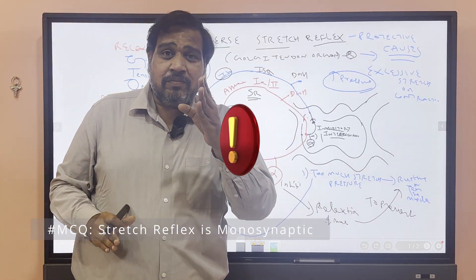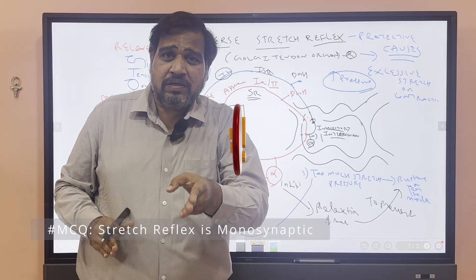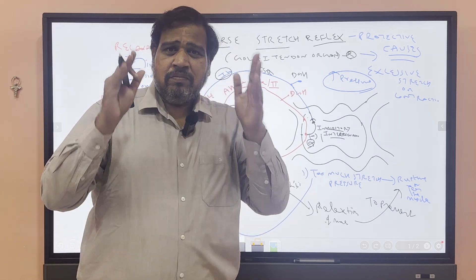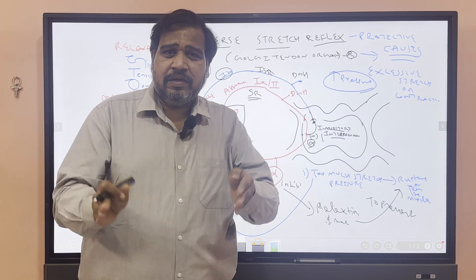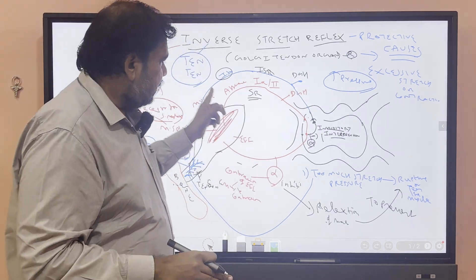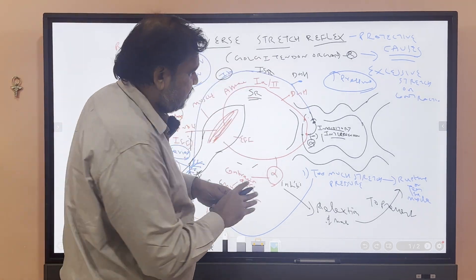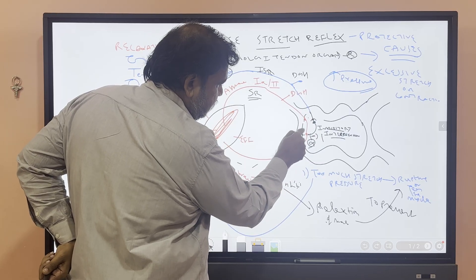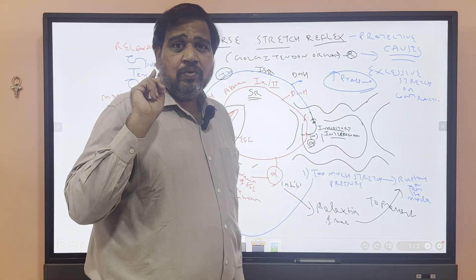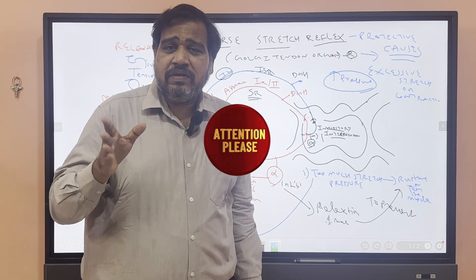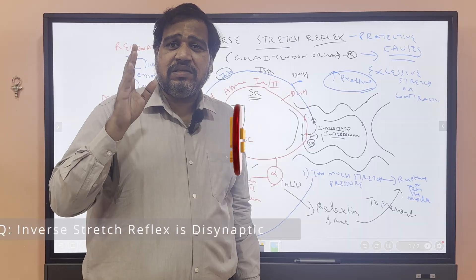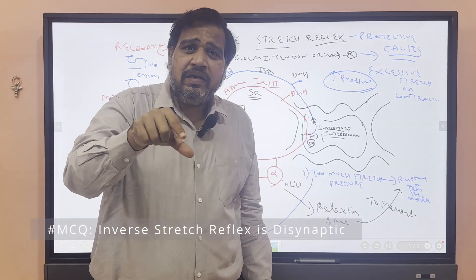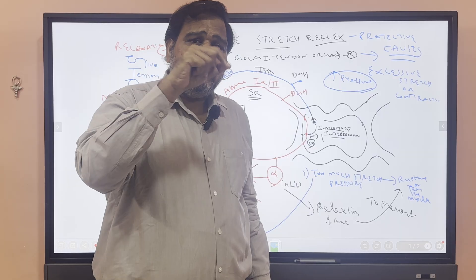Is stretch reflex monosynaptic, disynaptic, or polysynaptic? Stretch reflex is a monosynaptic reflex. But looking at the inverse stretch reflex diagram — the blue color — there is one synapse and then another synapse, making two synapses. So inverse stretch reflex is an example of a disynaptic reflex, because of the inhibitory interneuron.